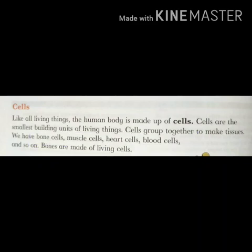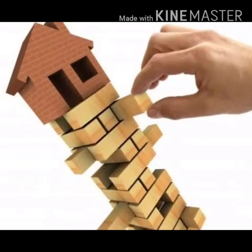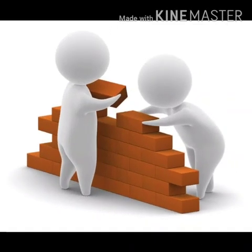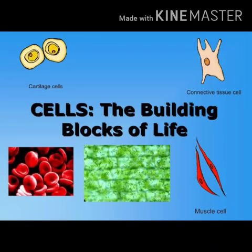Bones are made up of living cells. ایک building کی construction میں bricks اور blocks کی ضرورت ہوتی ہے — ان کے بغیر building complete نہیں ہو سکتی۔ اسی طرح human body بہت ہی tiny units سے مل کر بنی ہوتی ہے جنہیں cells کہا جاتا ہے۔ Human body کی structure کے لیے بھی basic unit یعنی cell کی ضرورت ہوتی ہے۔